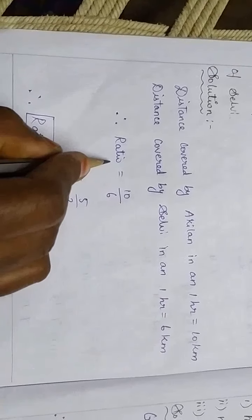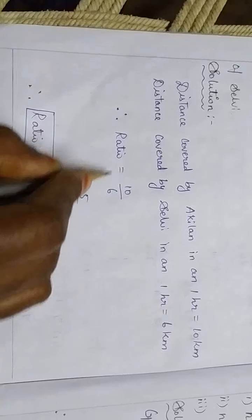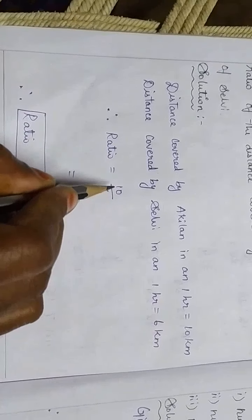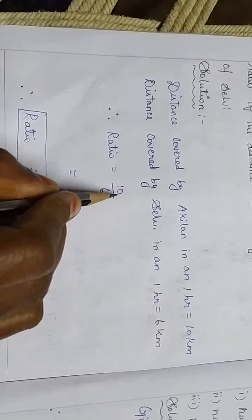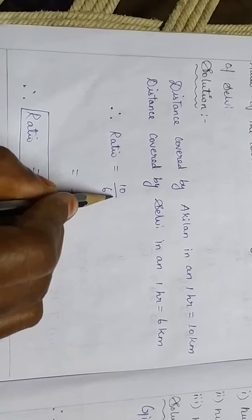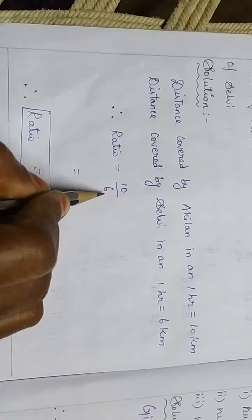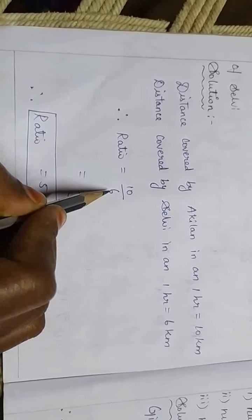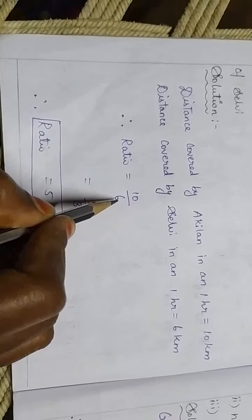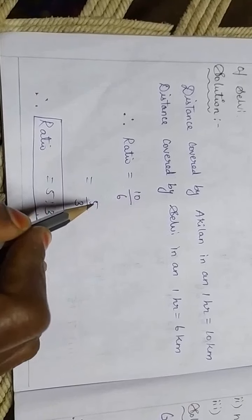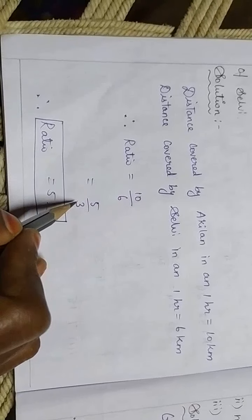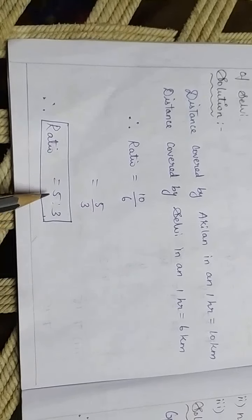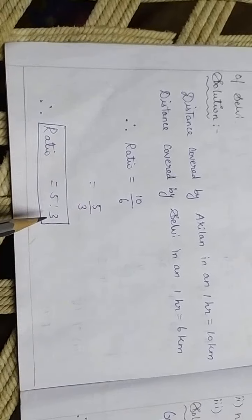Now we have to find the ratio. Distance covered by Aguilin divided by distance covered by Selvi, so 10 divided by 6. By cancelling this we will get 5 divided by 3. Now we have to write in ratio: 5 is to 3.